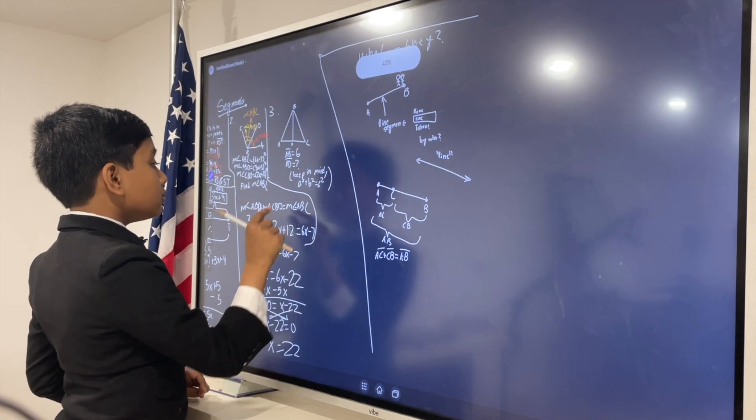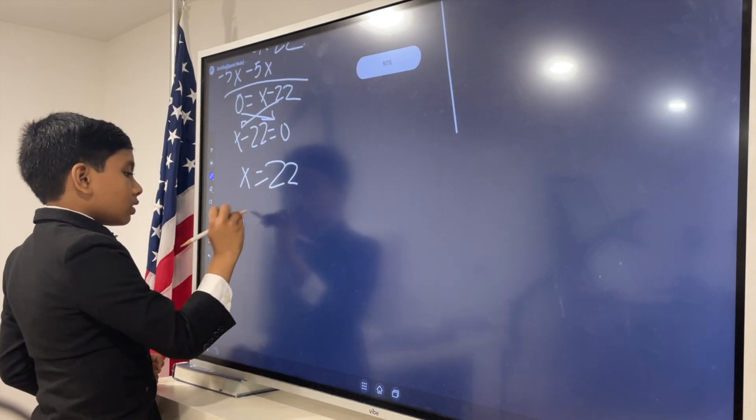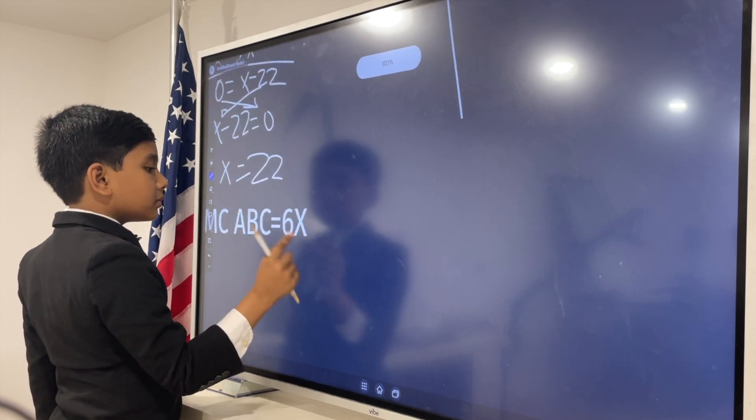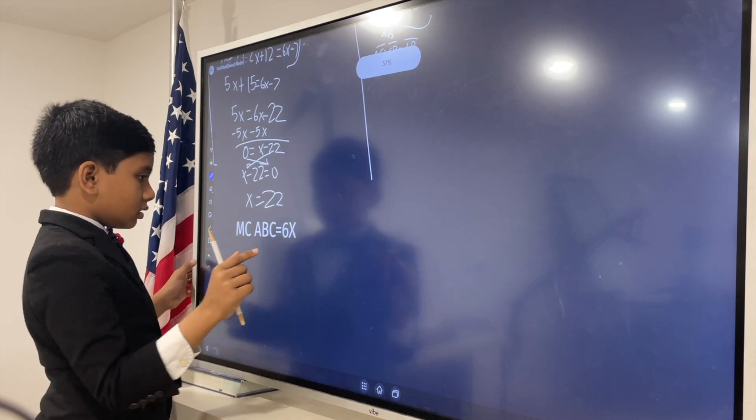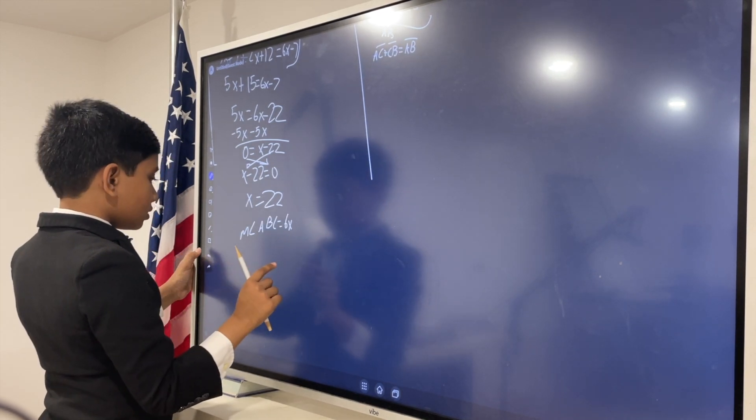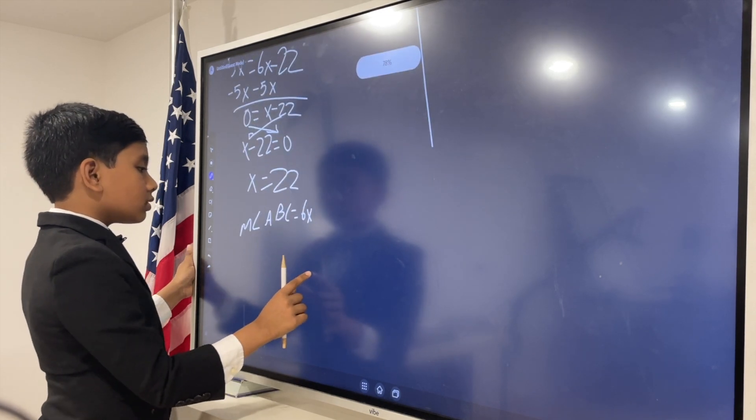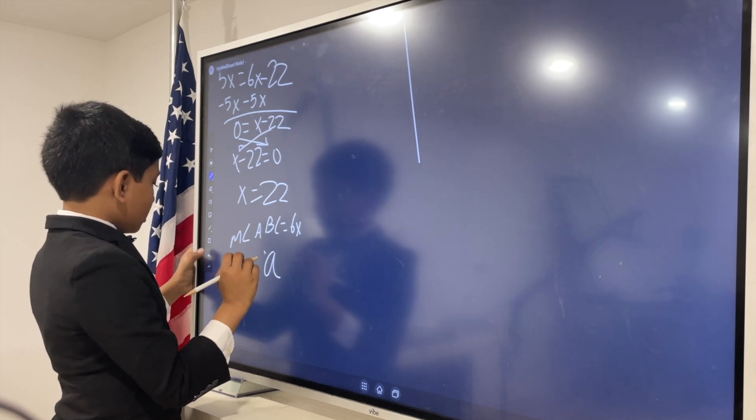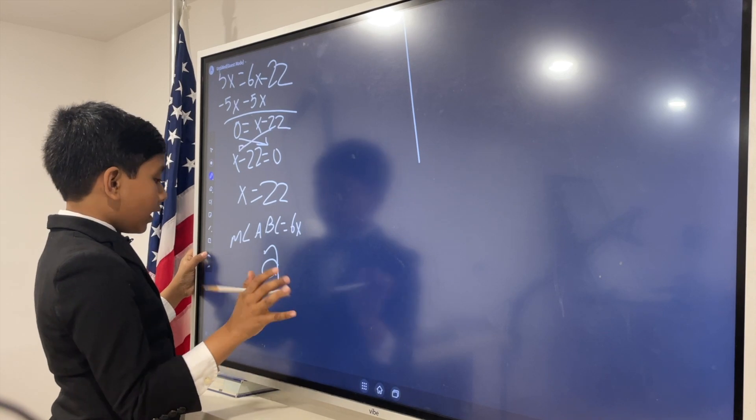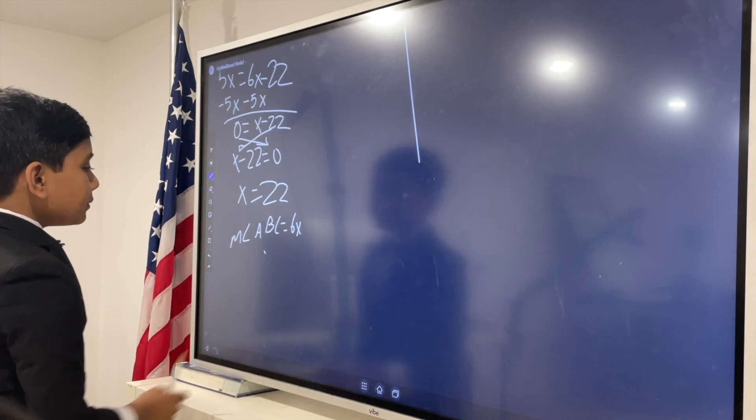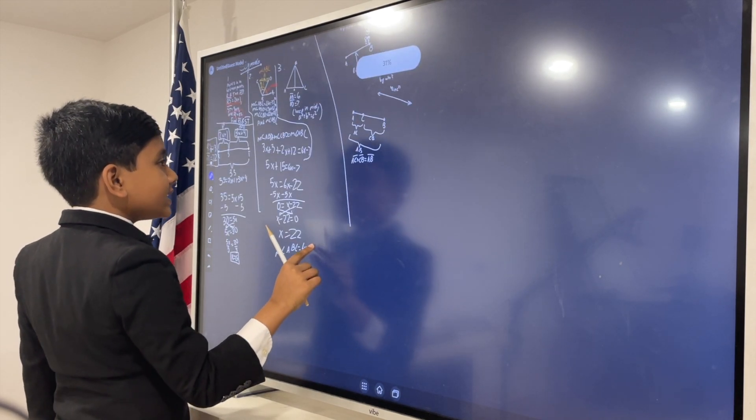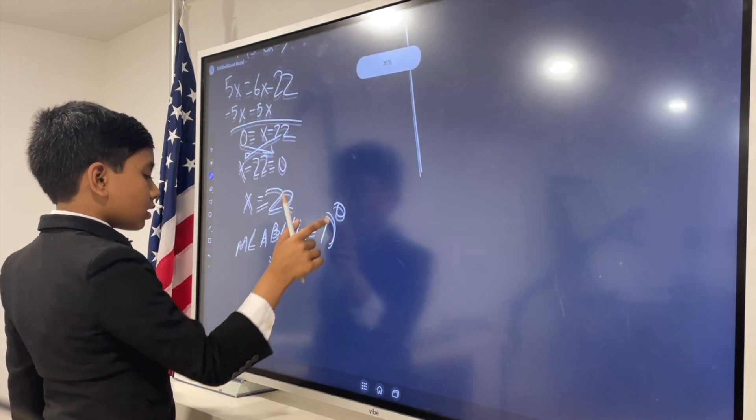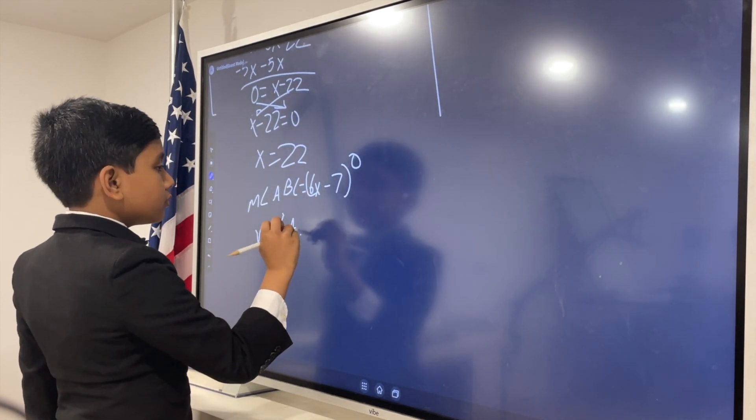So, now, we know that angle ABC is 6x minus 7, if I am correct. Yeah, I am. Angle ABC is equal to 6x minus 7 degrees. And, now, we know what x is.